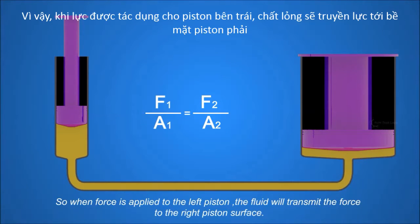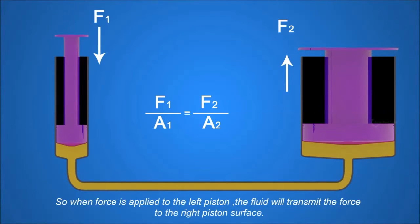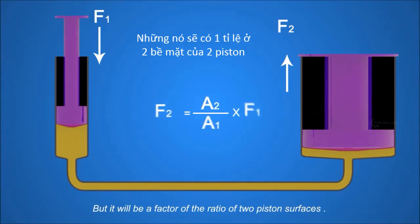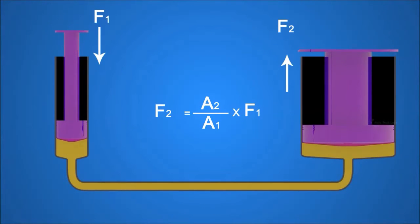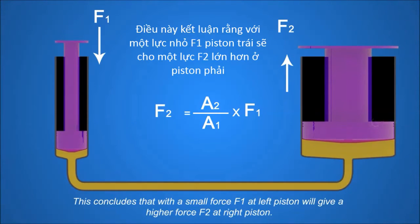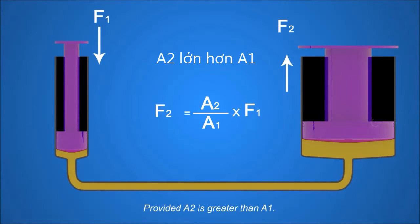So when force is applied to the left piston, the fluid will transmit the force to the right piston surface, but it will be a factor of the ratio of the two piston surfaces. This concludes that a small force F1 at the left piston will give a higher force F2 at the right piston.